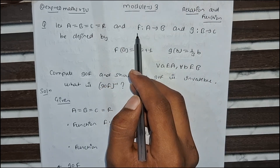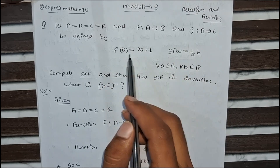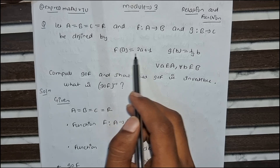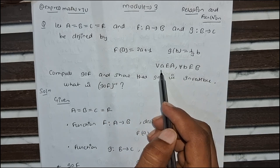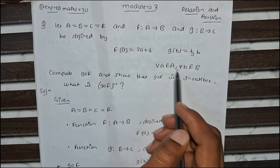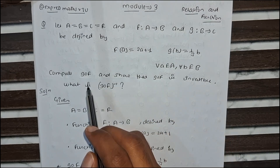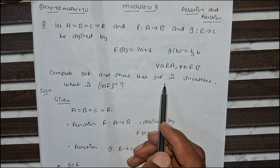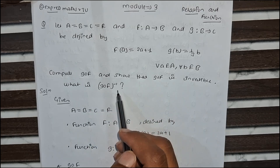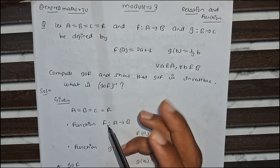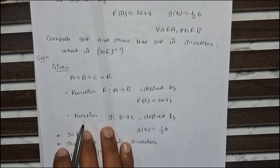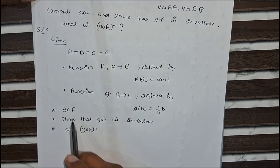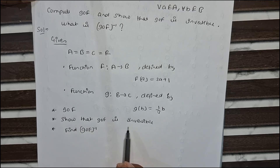So here two functions are given. First is f and second is g, where f(a) = 2a + 1 and g(b) = (1/3)b, where small a belongs to capital A and small b belongs to capital B. We need to compute g∘f, show that g∘f is invertible, and find (g∘f) inverse. These are the three parts of the question.